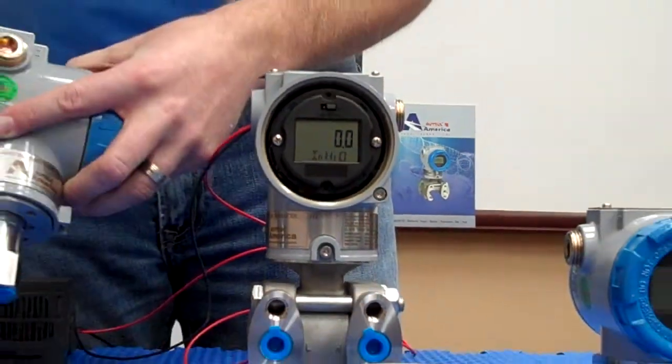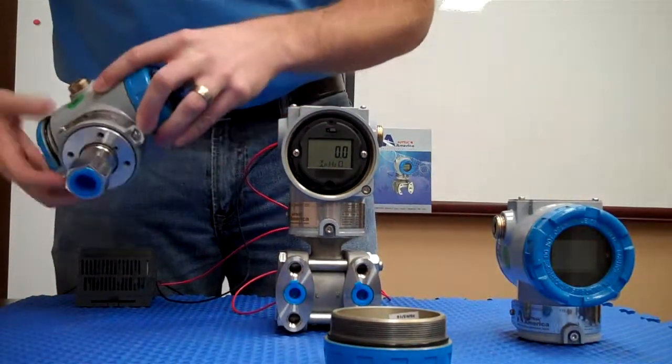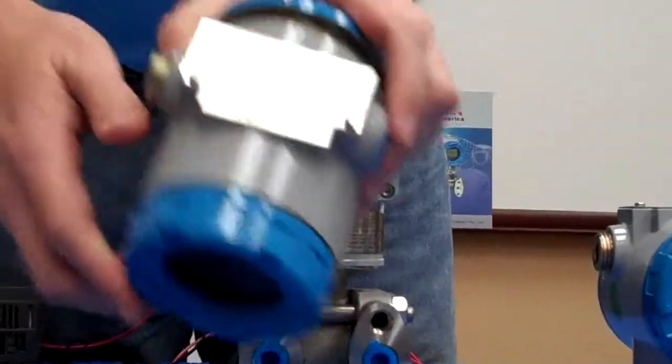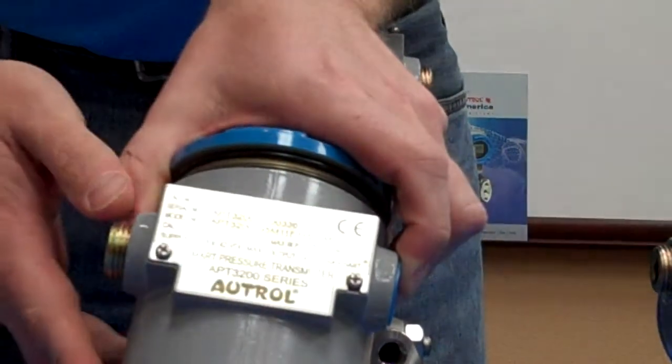Each transmitter comes with approval stamps here on the side, as well as information about the transmitter itself on the top.